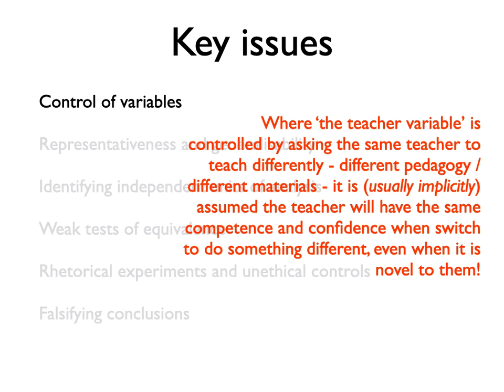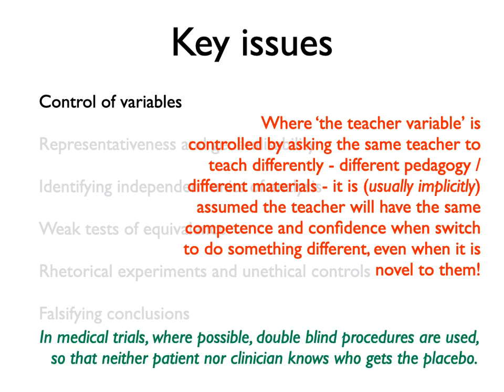One of the issues is teacher beliefs, which much research shows often have an effect on outcomes. If the teacher is persuaded the experimental treatment is an improvement, or is entirely unconvinced by it, then that may be enough to make a difference. Even if the teacher simply lacks confidence in their competence to teach in a different way, this may make a difference. It is issues such as this that have led to medical studies adopting double-blind conditions in drug trials, so that neither the patients nor the clinicians administering treatment know whether a tablet or injection actually contains the substance being tested.